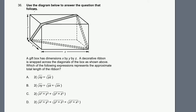Problem 36. Use the diagram below to answer the question that follows. A gift box has dimensions x by y by z. A decorative ribbon is wrapped across the diagonals of the box as shown above. Which of the following expressions represents the approximate total length of the ribbon? Let's measure this ribbon.